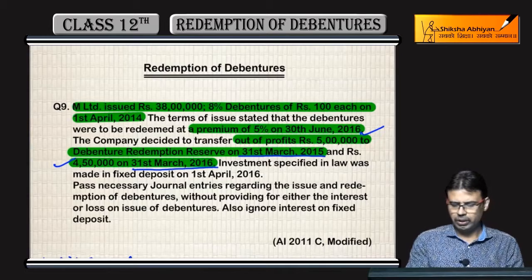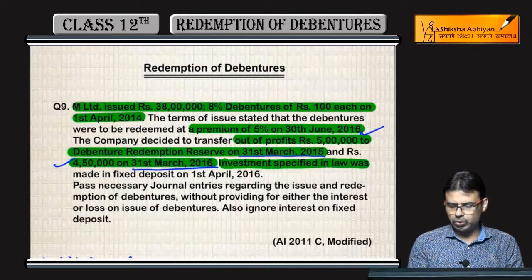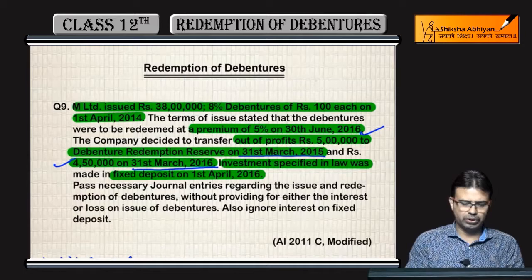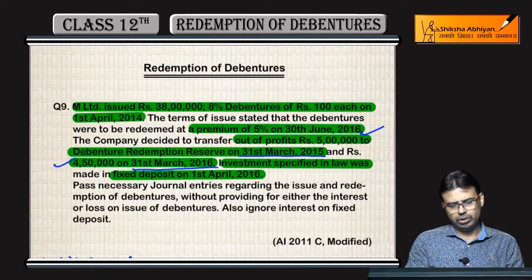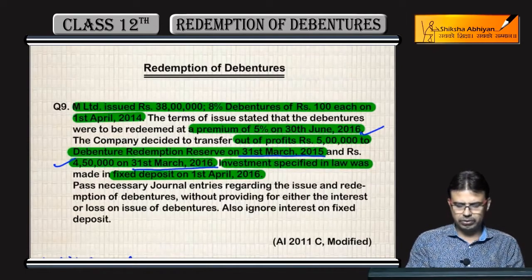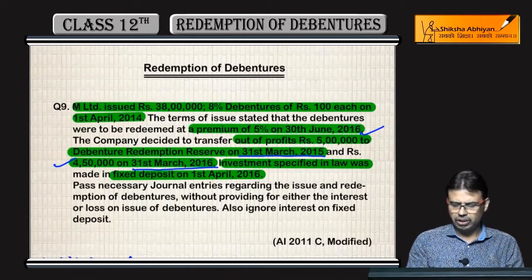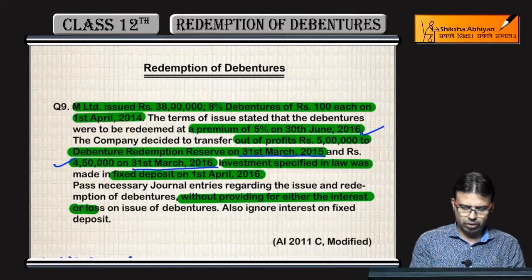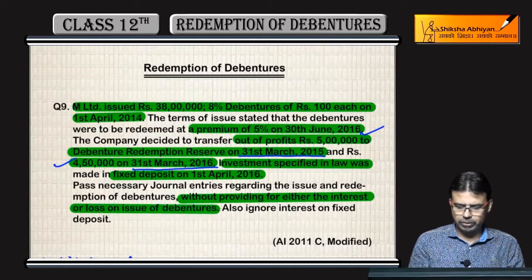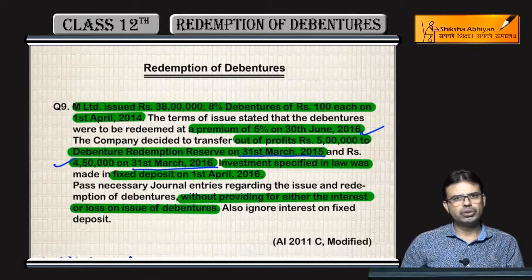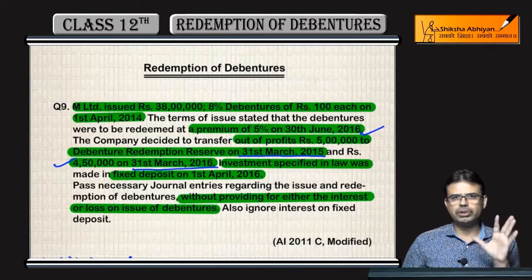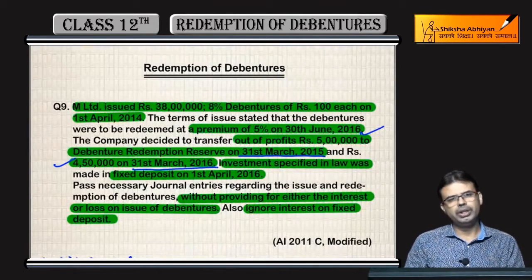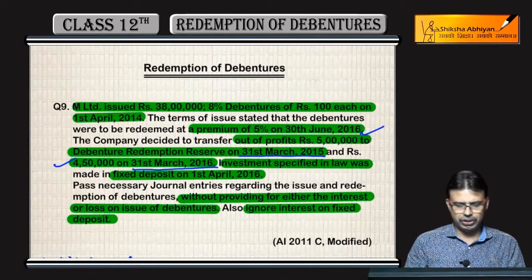The investment required by law was made on 1st April 2016, and sold on 30th June 2016. Pass the necessary journal entries without providing for either the interest or loss on issue of debentures. Loss on issue of debentures is not to be written off, interest on debentures need not be shown, and ignore interest on FD also. This is an examination question.